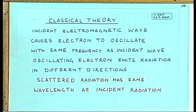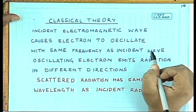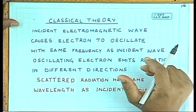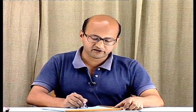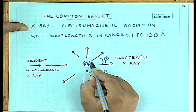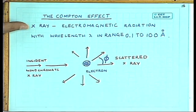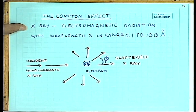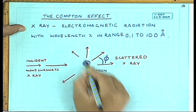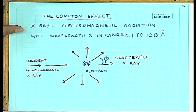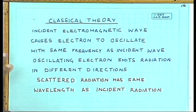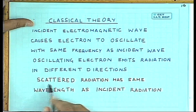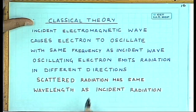In the classical theory of radiation, the frequency of the incident X-ray determines the frequency of oscillation of the electron. The electron will oscillate at the same frequency as the incident radiation, and the radiation emitted by the electron due to this oscillation will also be at the same frequency. So classically, the scattered radiation should have the same wavelength and frequency as the incident radiation.